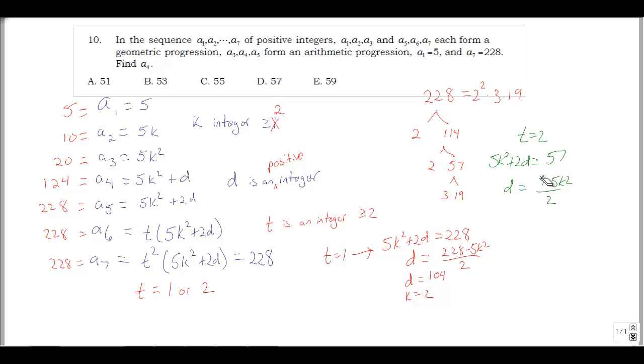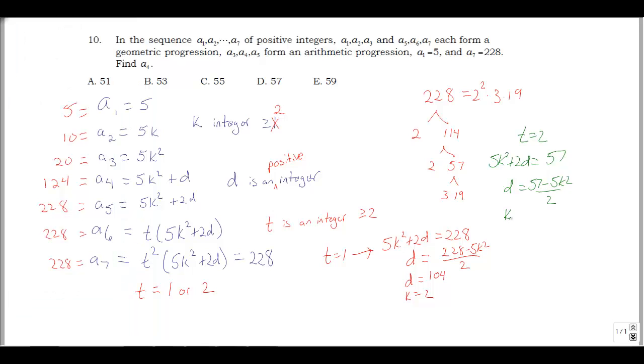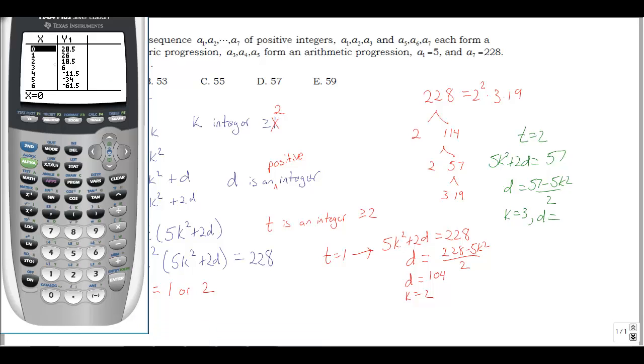Minus 5k squared. Well, we can just edit our y equals. Change that 19 to the 57. Go back to the table. And we get, okay, x equals 1, that's t is 1 again, or k is 1, I'm sorry. Again, we don't really want that. We can do k equals 3, and then d equals 6.